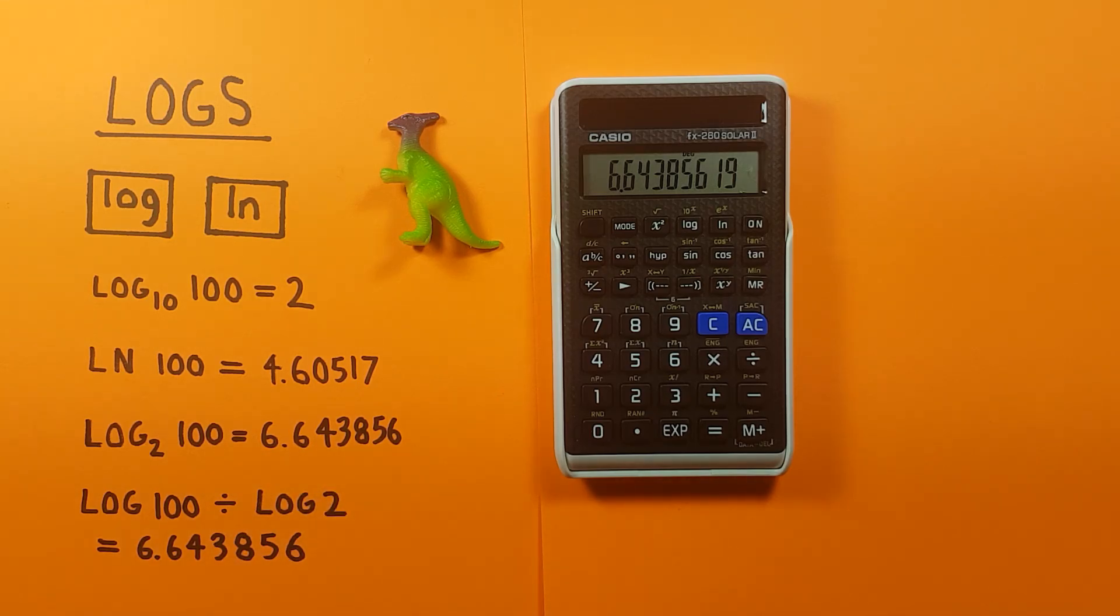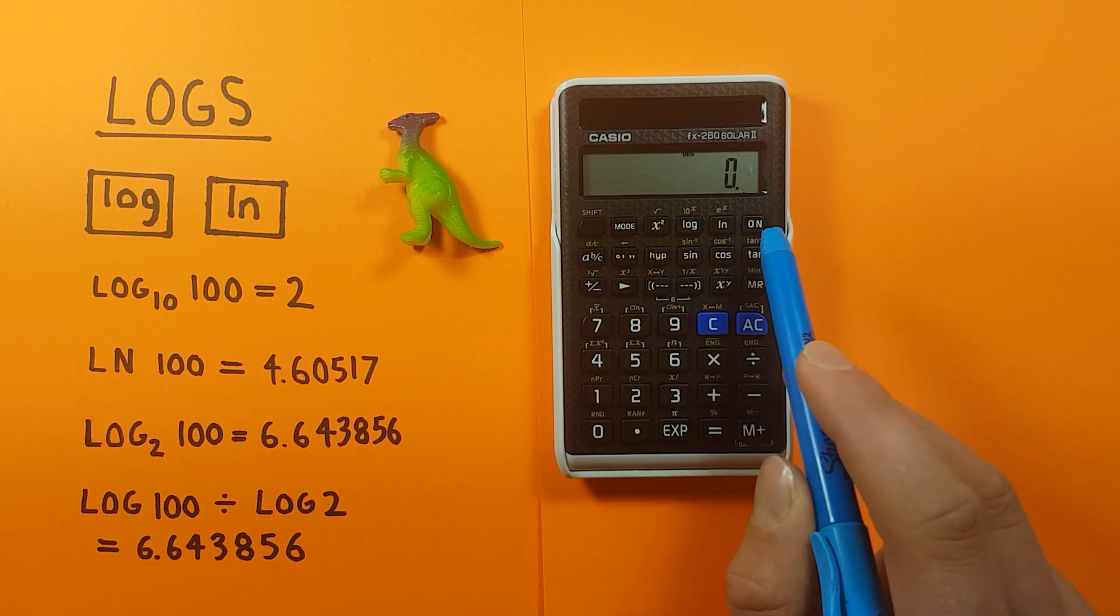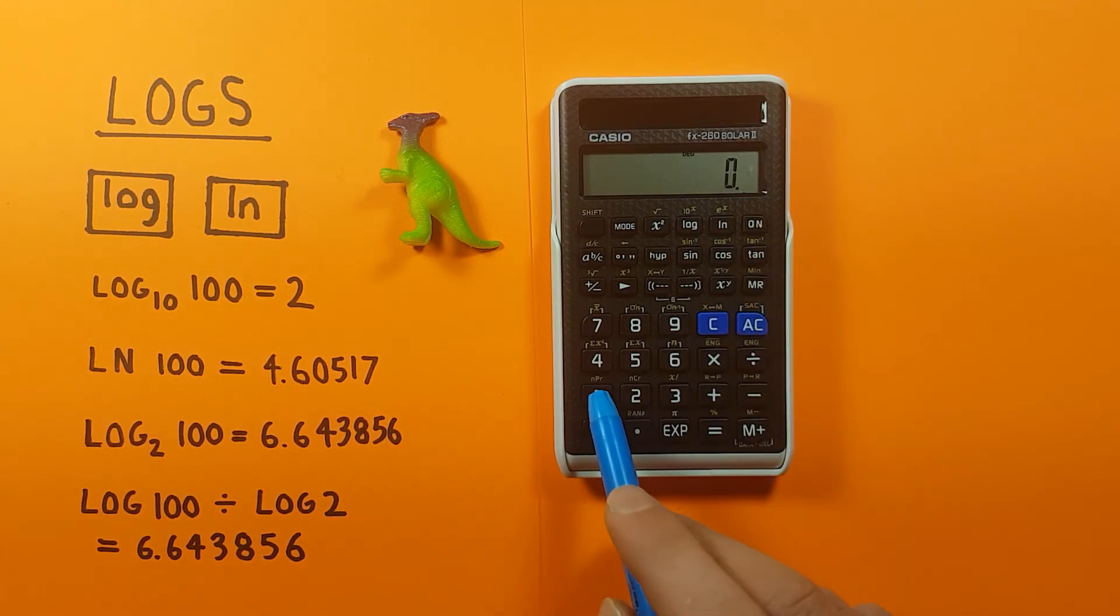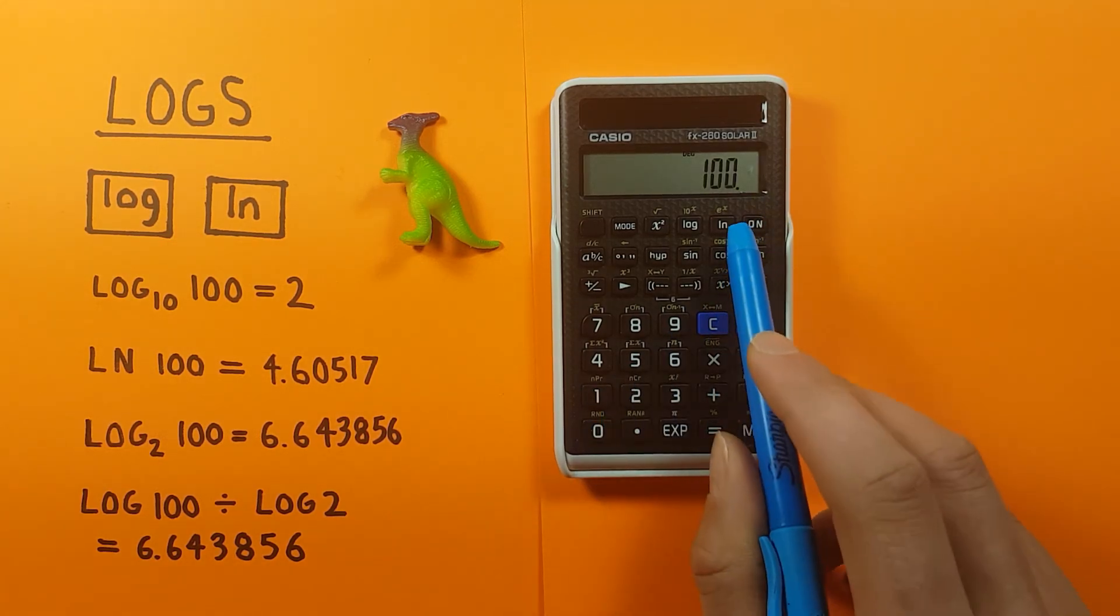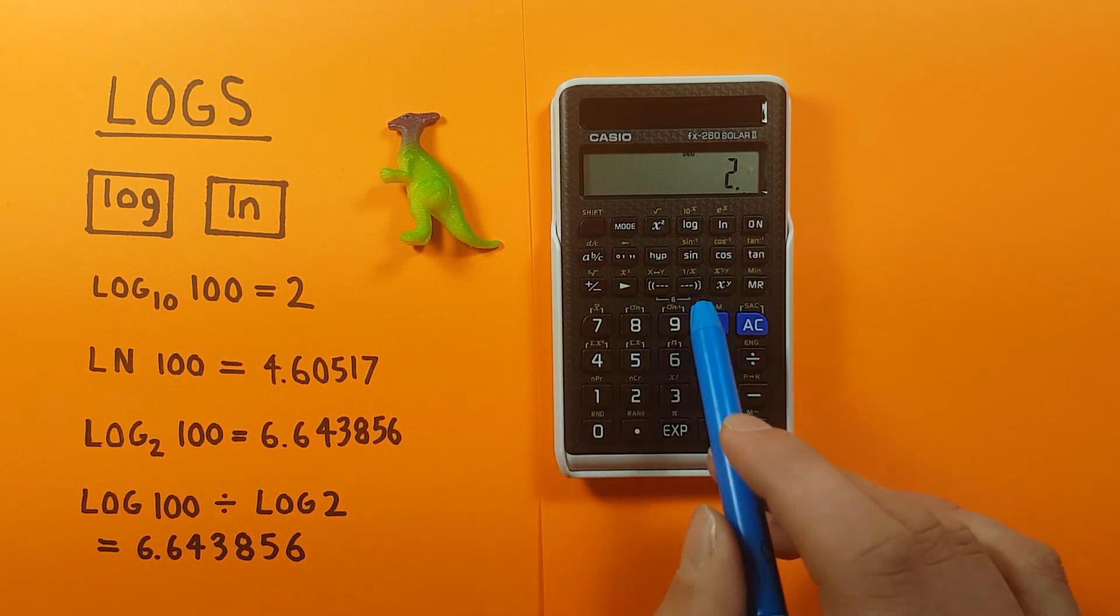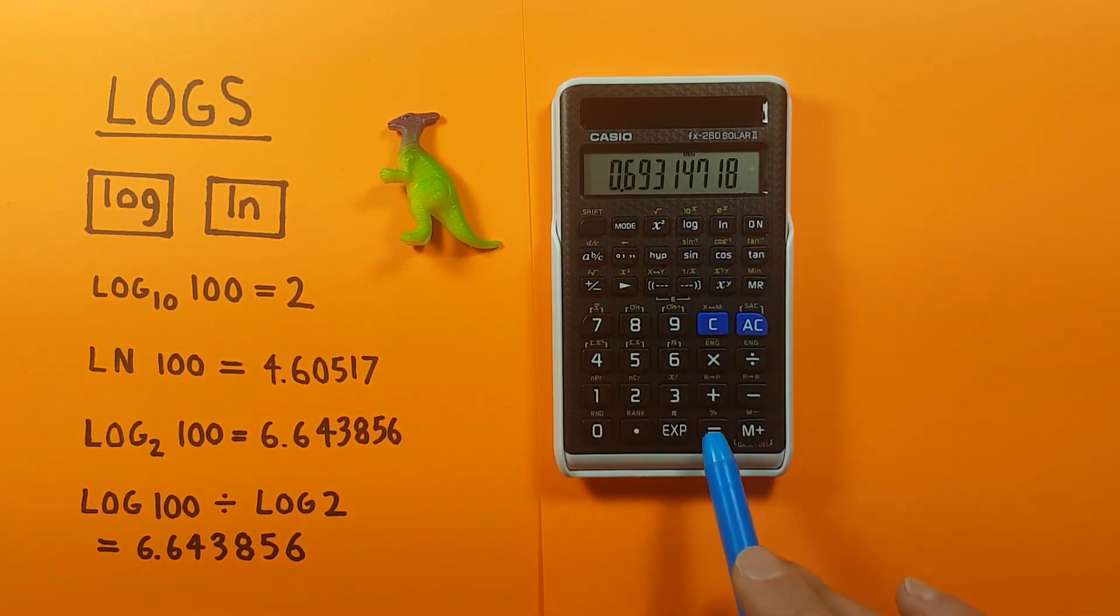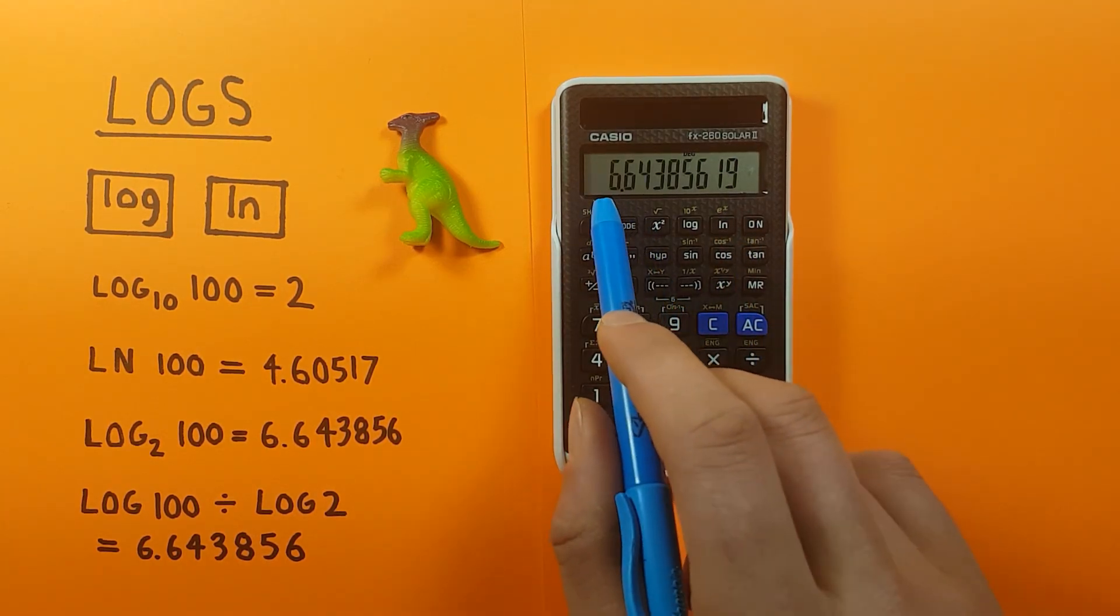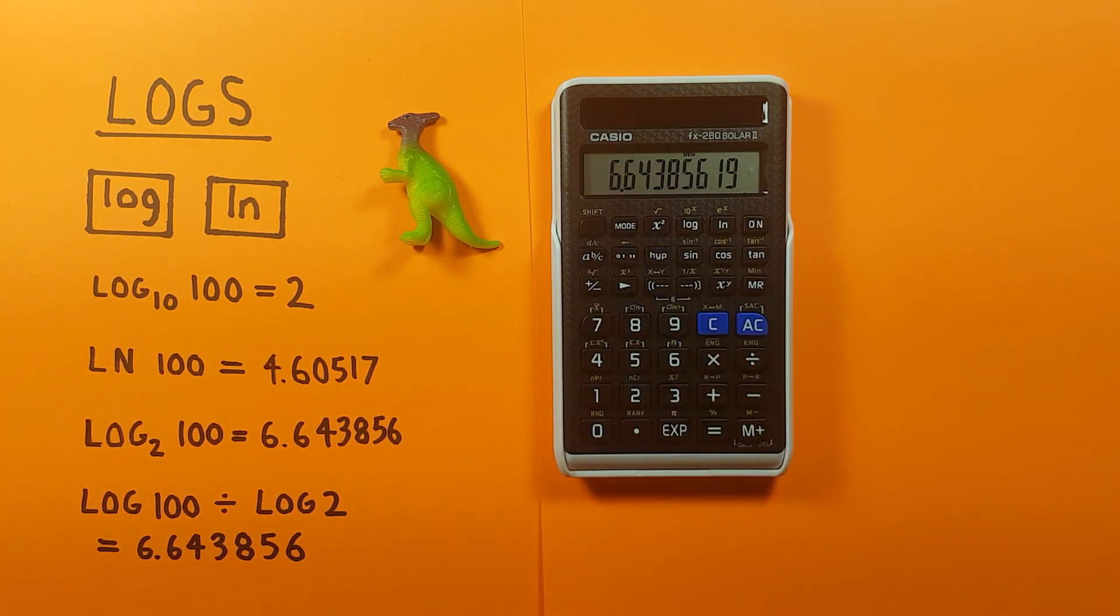And since this is a simple ratio we can do this with the natural log as well. So if we place 100 on the screen, find the natural log of it, and then divide this by the natural log of our base, which is 2, and press equals. Again you can see we get 6.643856, which is the log base 2 of 100.